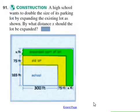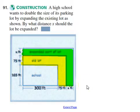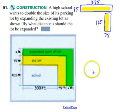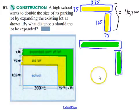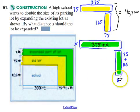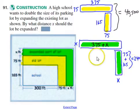That brings us to the last word problem. I've got to try to do this in two minutes, so I'm going to do this one relatively quickly. Here's the setup — hit the pause button, read this, and make sure you understand what you're being asked. What it's telling you is that the yellow space is the same amount as the green space. They're identical because you're doubling the old lot in yellow by adding the expanded part in green. The yellow space can be separated into two rectangles, which add up to 40,500 square feet.